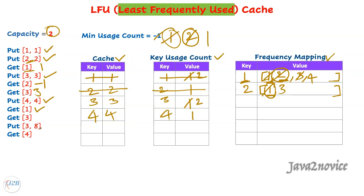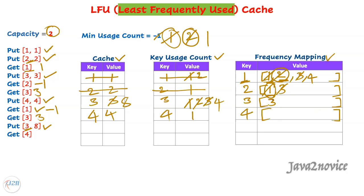The next get call for key one returns minus one since it doesn't exist. The following get call for key three returns its value — we increment its count to three and create a new count-three linked list, moving key three there. Then there is a put call where key three already exists, so we just update its value to eight and update the counters — count becomes four. Since there is no count-four list, we create one and move key three there. This is how LFU cache functions.